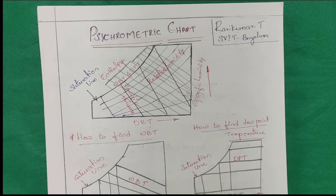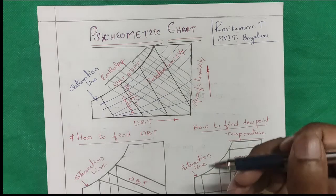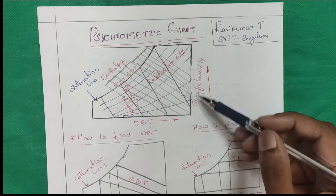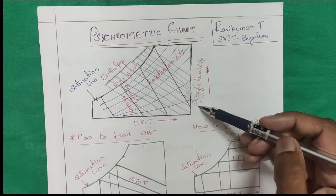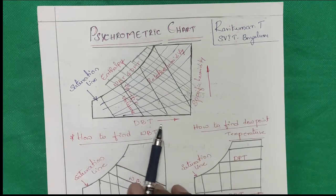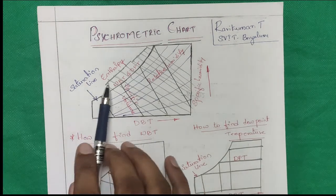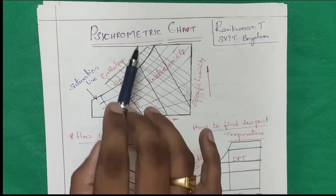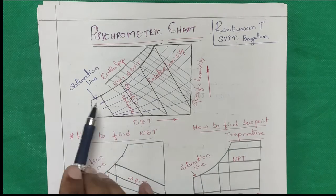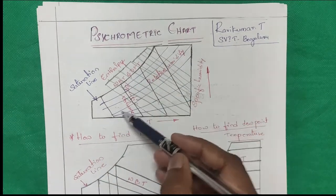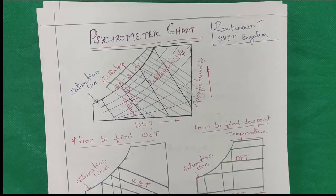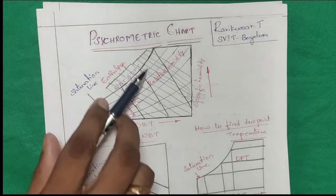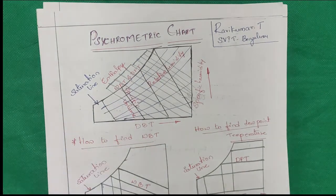So what is the psychrometric chart? You can observe: the vertical line indicates specific humidity, and this is dry bulb temperature. You will be having one saturation line here. This is the saturation line, and you will be having enthalpies — inclined lines are enthalpies — and then you will be having curves here. These curves are called relative humidity. You will also be having inclined lines toward drop-down, which are called specific volume.